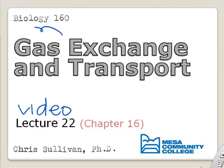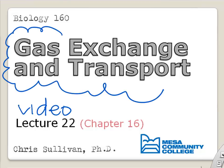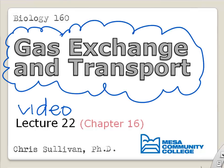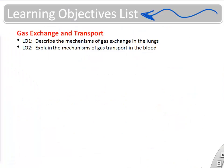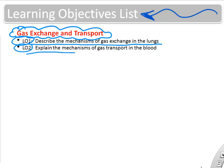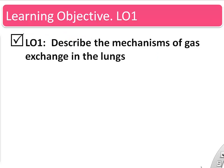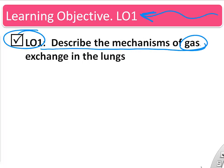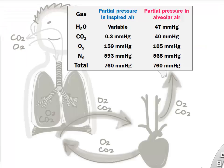This video covers gas exchange and gas transport. The learning objectives are to describe the mechanisms of gas exchange in the lungs and explain the mechanisms of gas transport in the blood. The first learning objective focuses on gas exchange in the lungs, specifically oxygen and carbon dioxide.